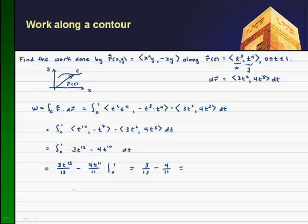Which gives me 33 minus 52, all over 143. So I just multiply by 11 out of 13, and then 13 goes into 143, 11 times 3 is 33. 11 goes into 143, 13 times 4 gives me minus 52. That gives me a work of a minus 19 over 143.